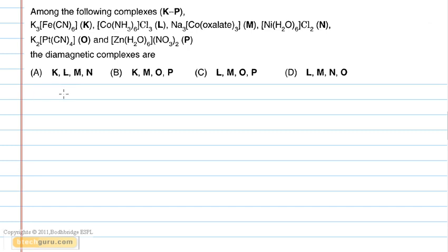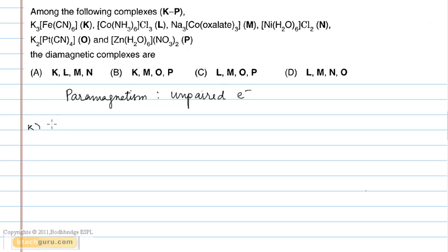Paramagnetism is a phenomenon exhibited by compounds with unpaired electrons. Complex K is K₃Fe(CN)₆. Here, Fe exists in the +3 state. The electronic configuration can be given as 3D⁵, 4S⁰.